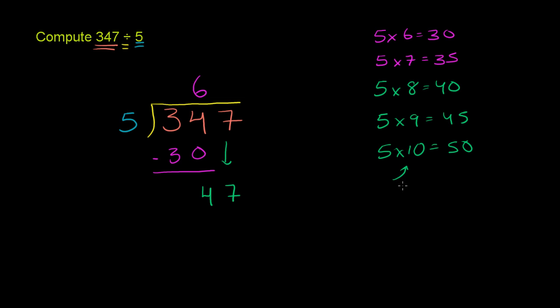So this is too big. So we want to go with 5 times 9 is equal to 45. Or 5 goes into 47 nine times. 9 times 5 is 45. And then you subtract again.